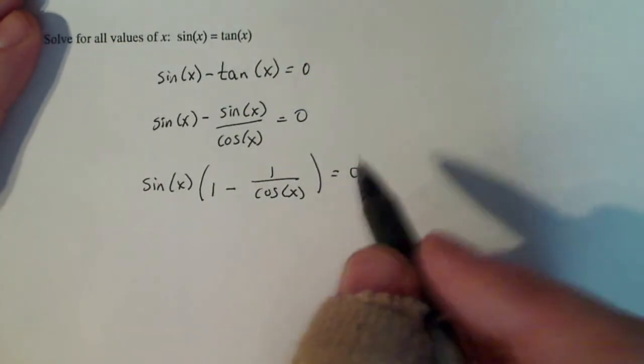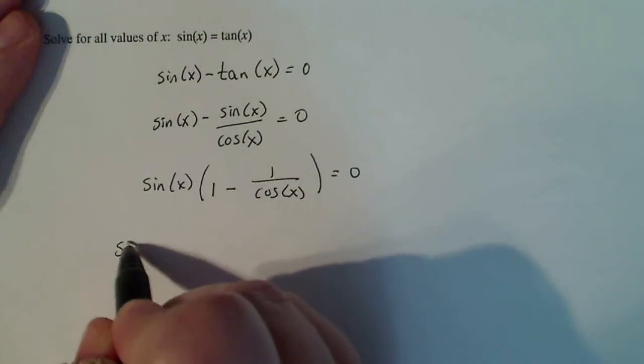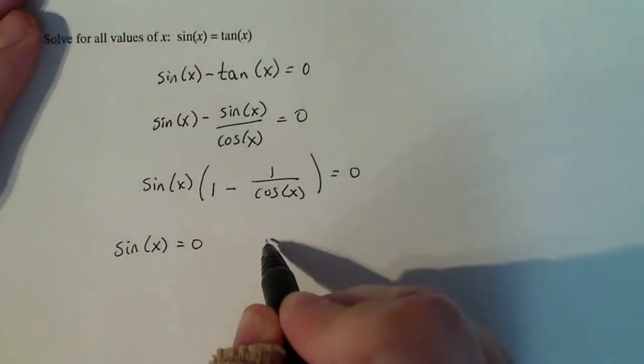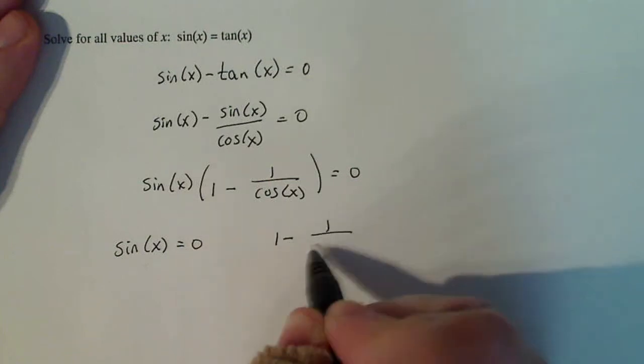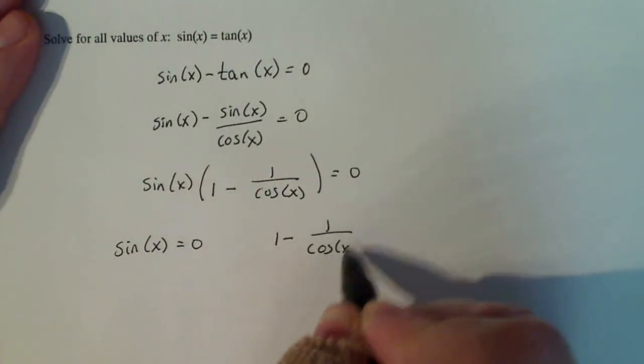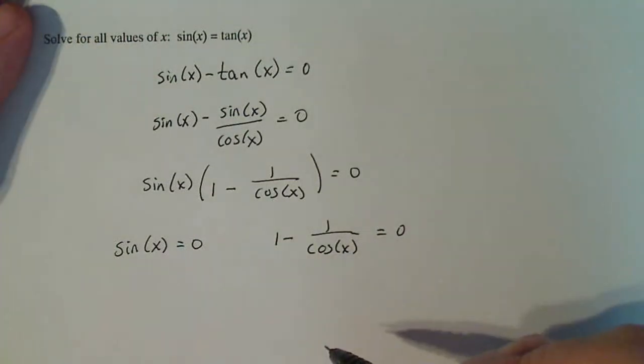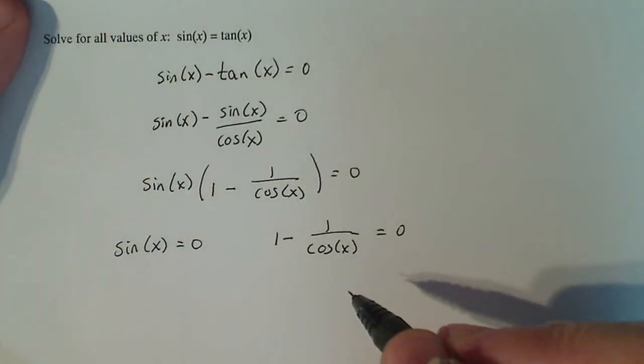Now I have a product of two things equal to zero. You're probably wondering why I'm not writing one over cosine as secant. Well, I understand the cosine function much more than I understand the secant function. I mean, I understand all of them, but I know students, this is something more common for them. So why not work with cosine if you can?